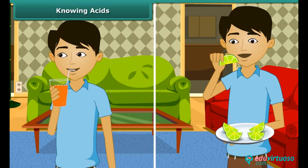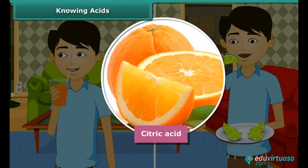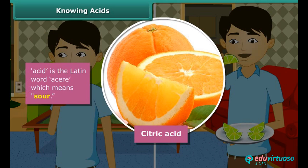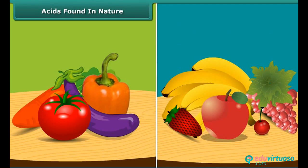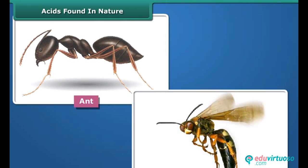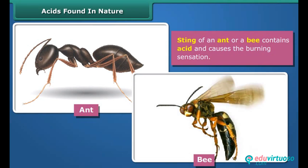Generally, sour-tasting substances contain acids. Some fruits contain citric acid, which is sour in taste. The origin of the word 'acid' is the Latin word 'acidus,' which means sour. Acid is found in natural substances like fruits and vegetables. Have you heard that the sting of an ant or a bee contains acid and causes a burning sensation?